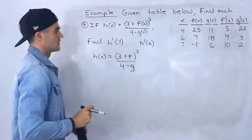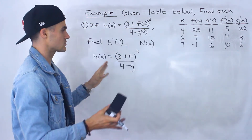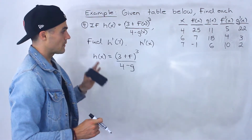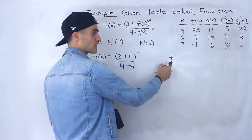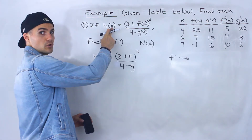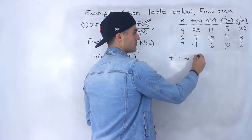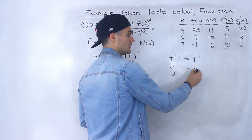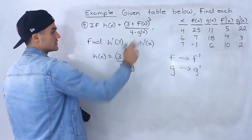Before finding the derivative, I'm going to rewrite h of x using just f and g instead of f of x and g of x, just to keep things cleaner. You don't have to do this, but it helps avoid confusion with the x's. The key thing to remember is that whenever you take the derivative of f, since f is not the independent variable x, the derivative of f is f prime — same thing with g: the derivative of g is g prime.